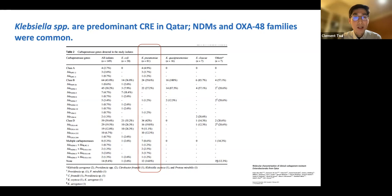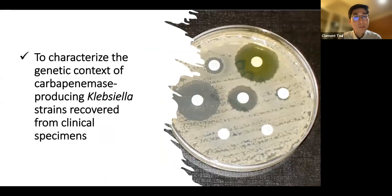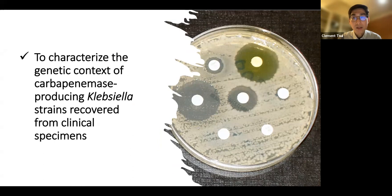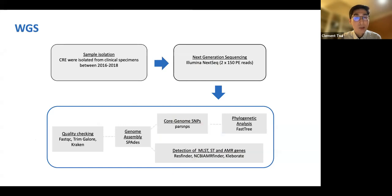We decided to look into the genetic context of all these carbapenemase-producing Klebsiella. The idea was to do whole genome sequencing of carbapenemase-producing Klebsiella recovered from clinical samples — from blood, urine, and different sources from patients — and then to understand the mechanisms of how these bacteria became resistant to carbapenems. We used a very general, standardized protocol similar to what is used in different parts of the world.